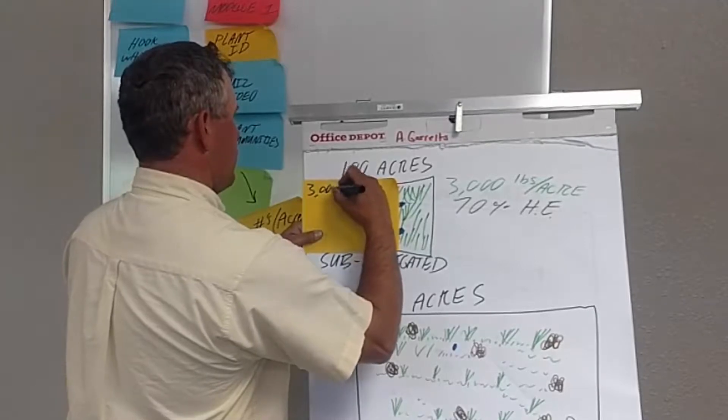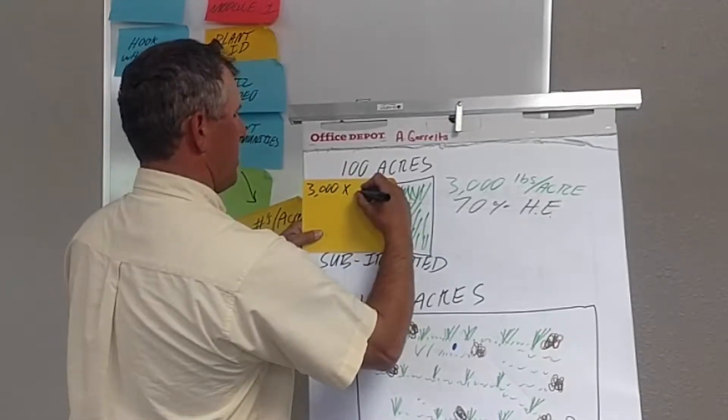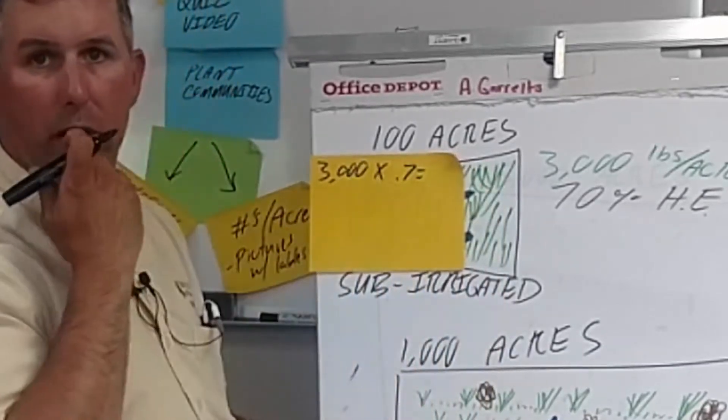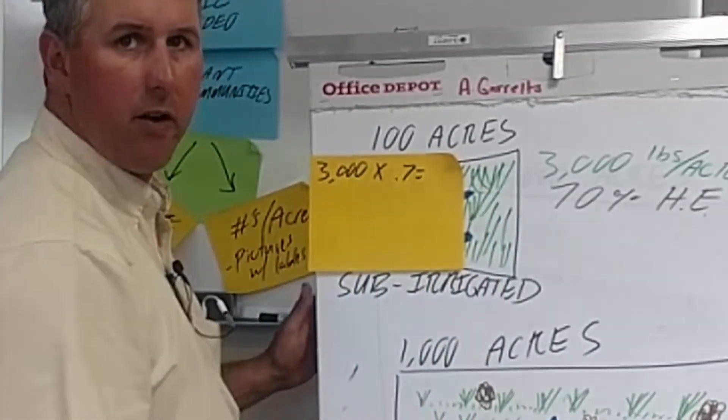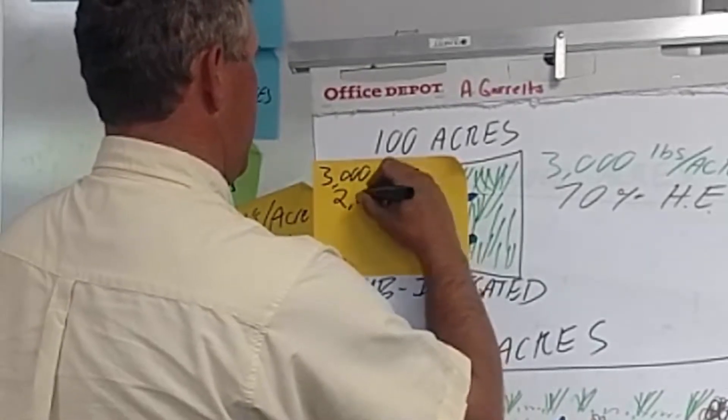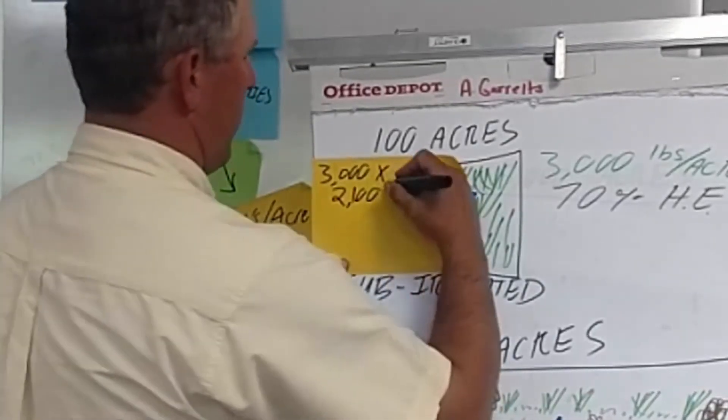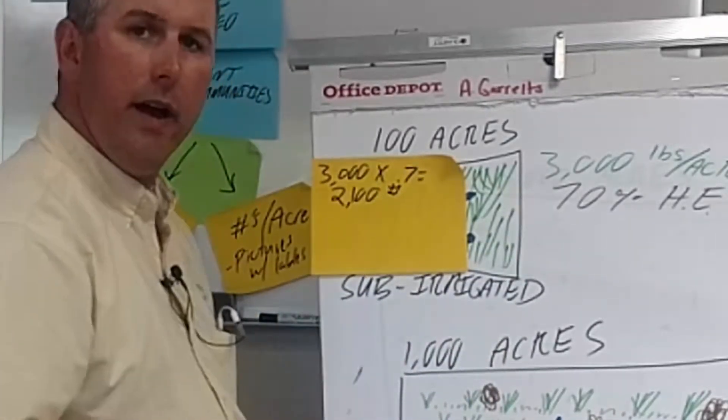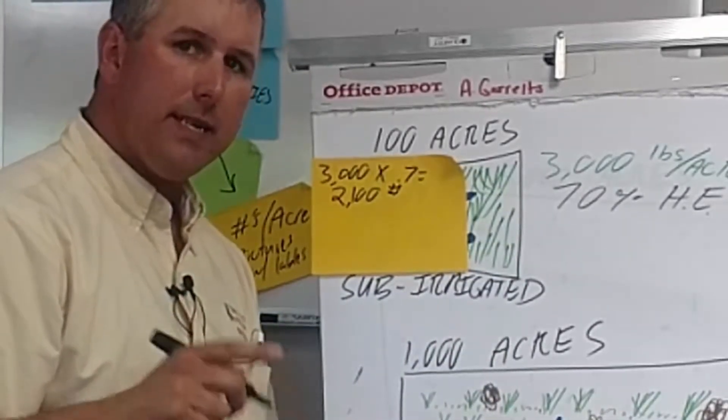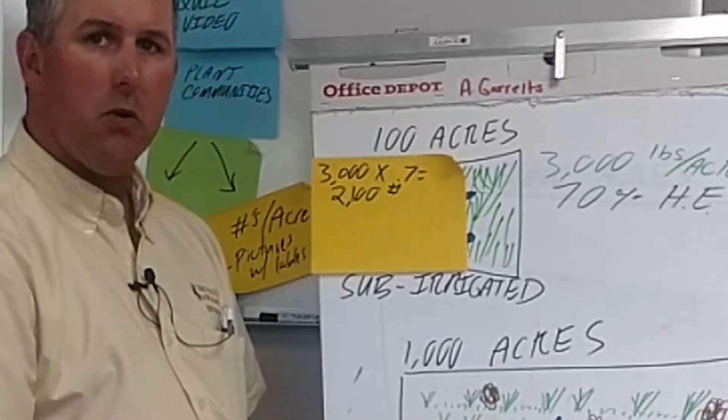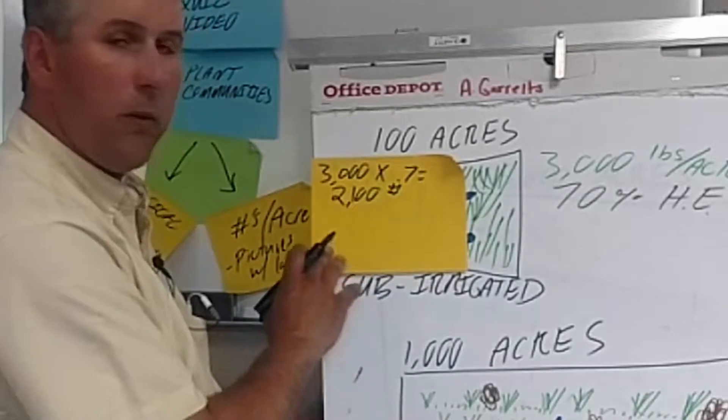3,000 pounds times 70% or .7 gives us 2,100 pounds per acre in the belly of a cow. 2,100 pounds ingested by the livestock. Remember, an AUM is 780 pounds of air-dried forage. So how many AUMs per acre are we grazing?